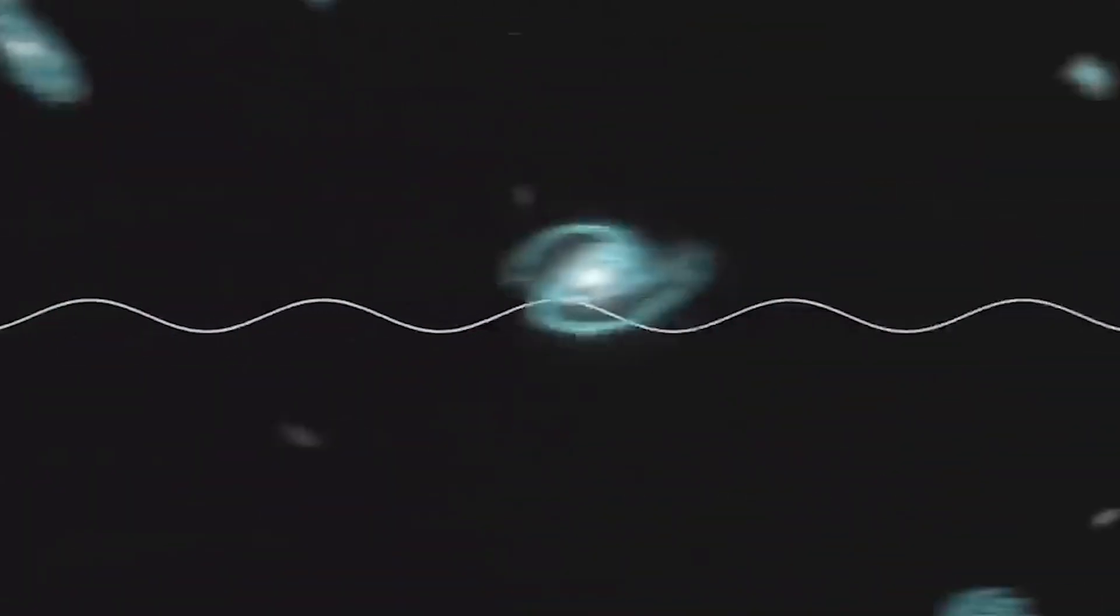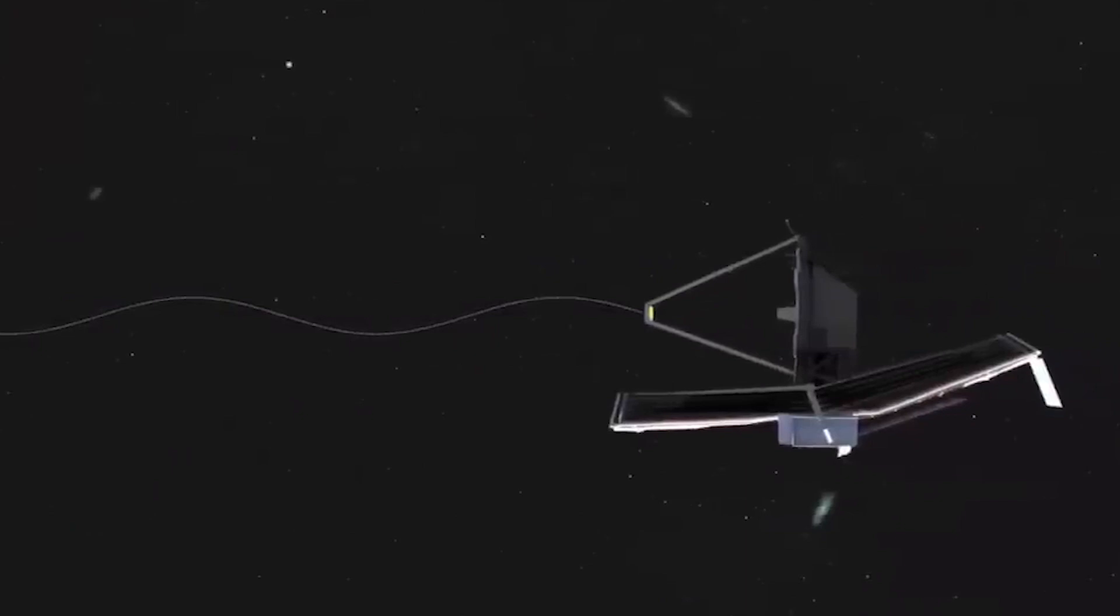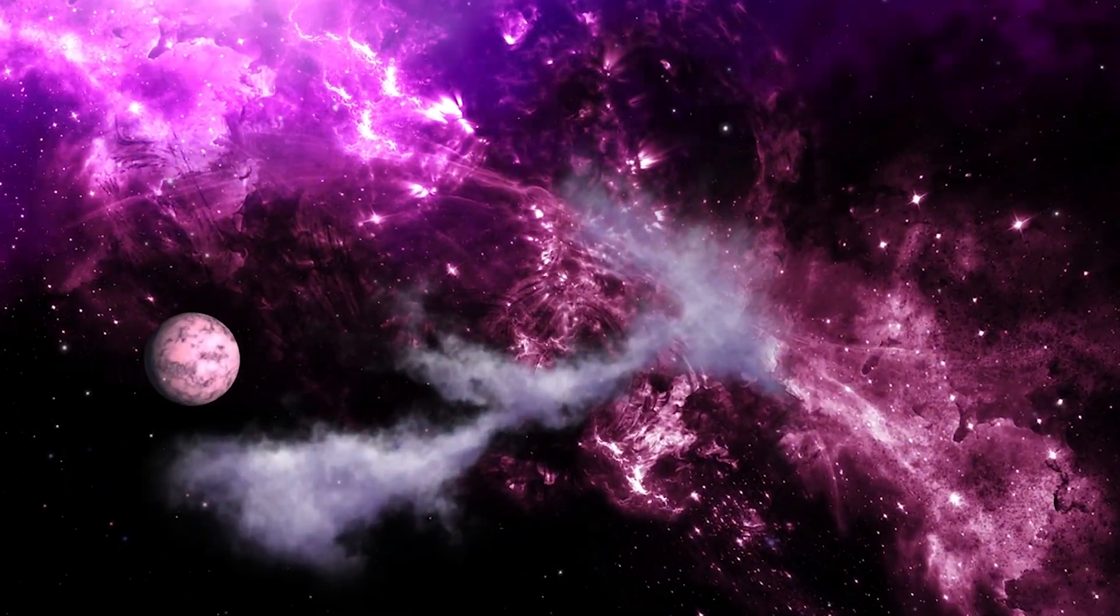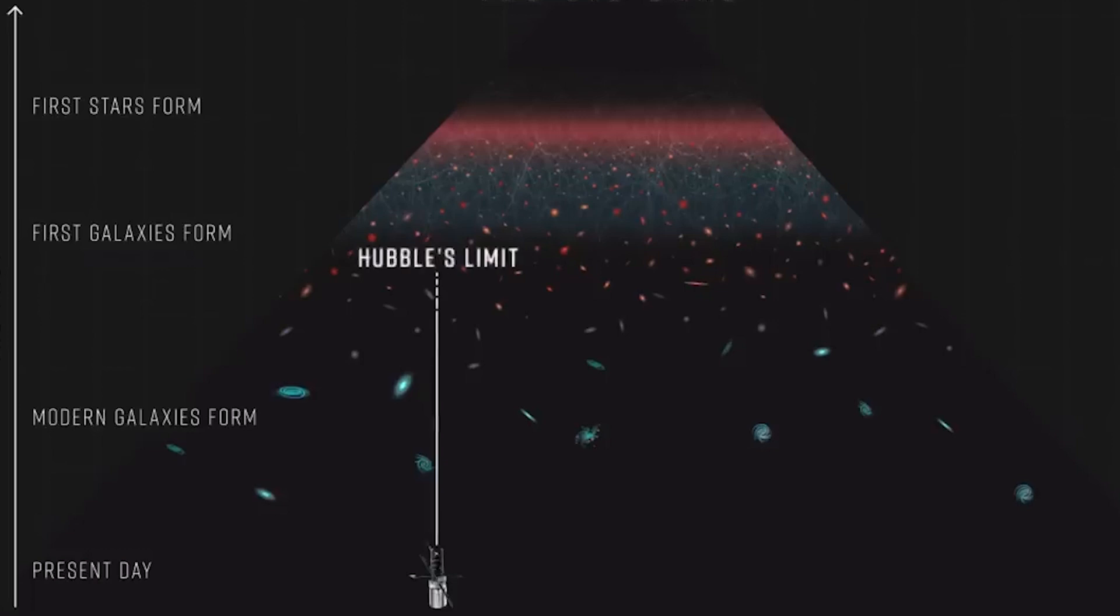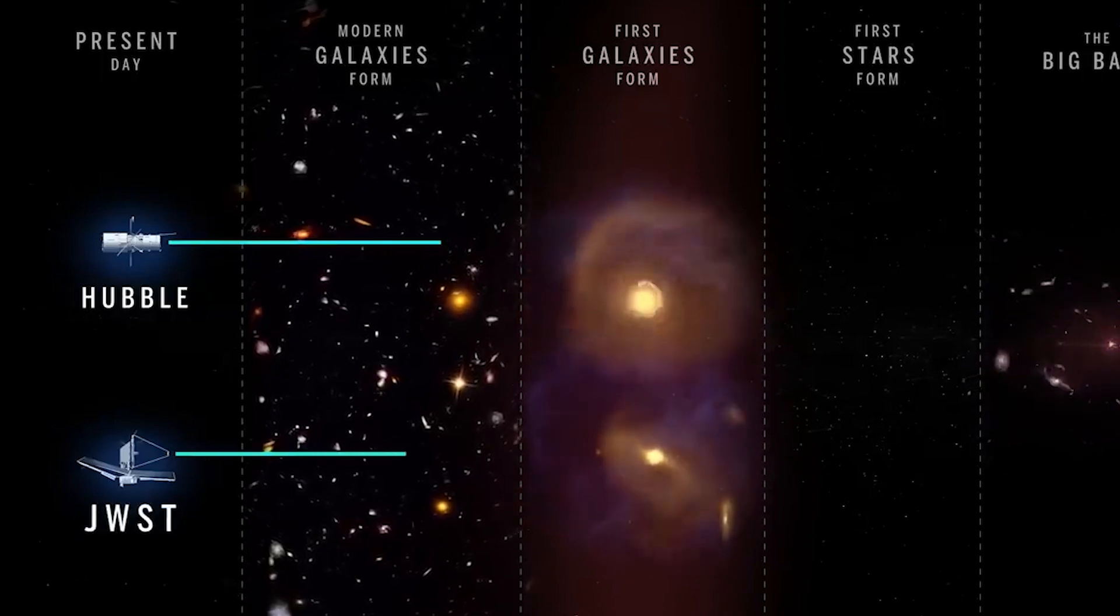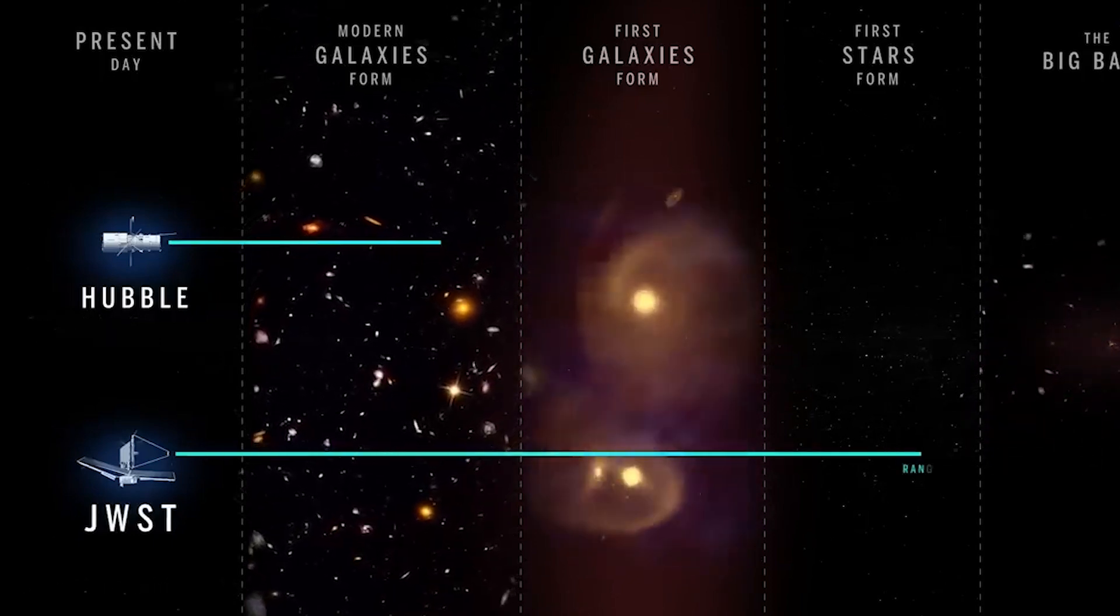This galaxy's redshift value of 13 indicates that it existed roughly 13.4 billion years ago, a mere 400 million years after the Big Bang. Only the James Webb Space Telescope, with its specially designed observation techniques, could capture the faint light from this incredibly distant galaxy.